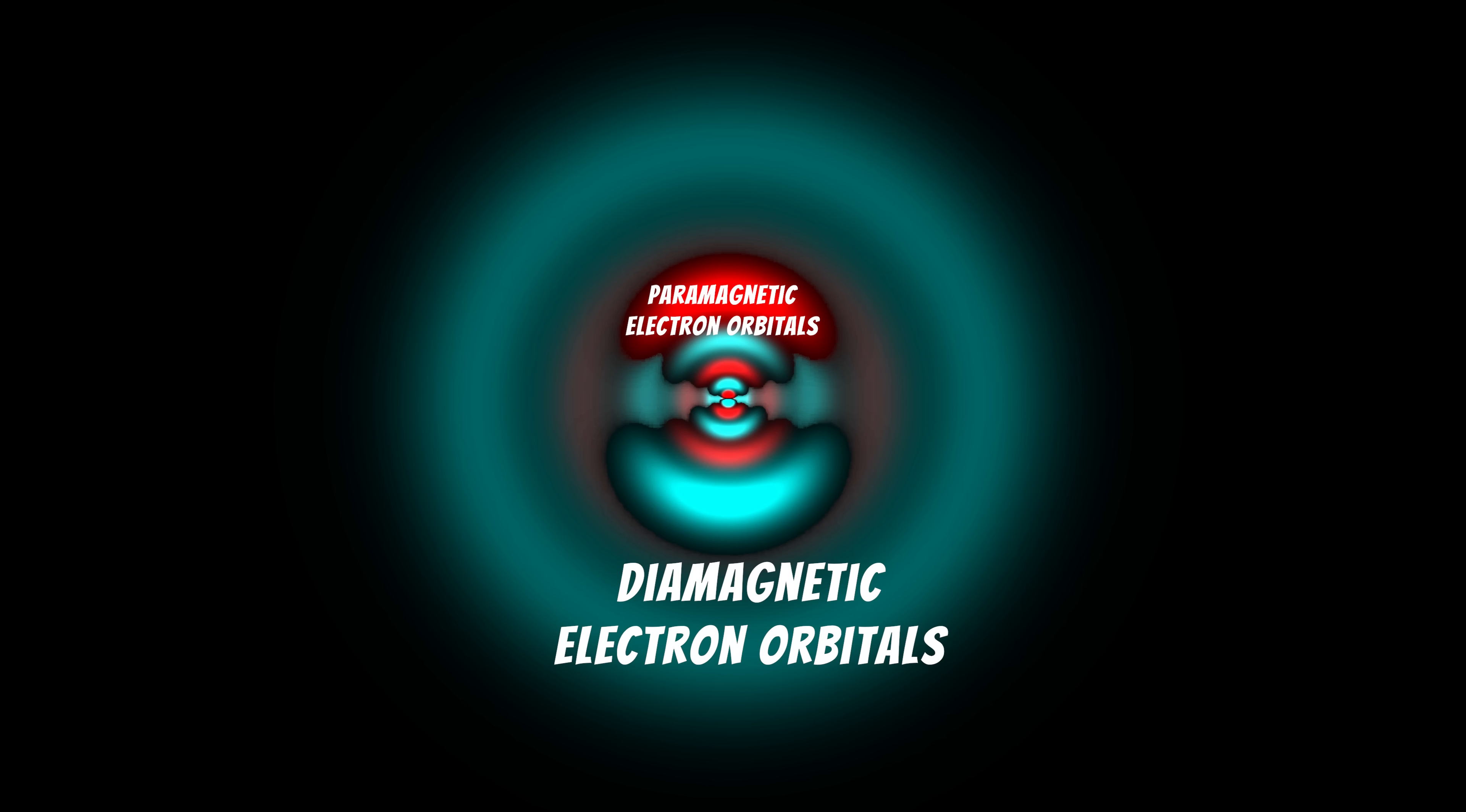So the paramagnetic effect weakens, but the diamagnetic effect remains strong. So instead of being weakly attracted to a magnet like we'd expect, bismuth is repelled more strongly than any other naturally occurring element.